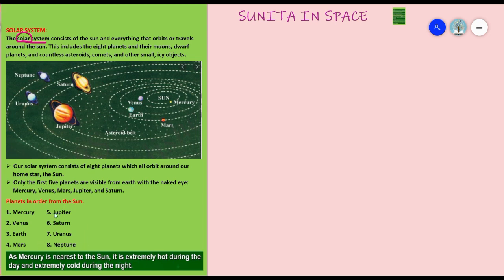These are our complete eight planets. Our solar system consists of eight planets which all orbit around our home star — the Sun. The Sun is called our home star, and all the planets revolve around it.